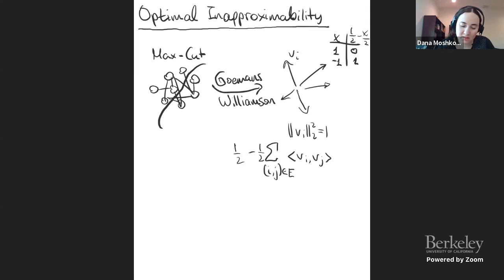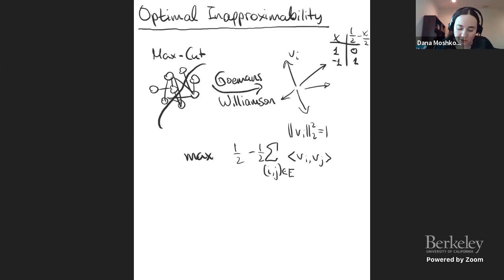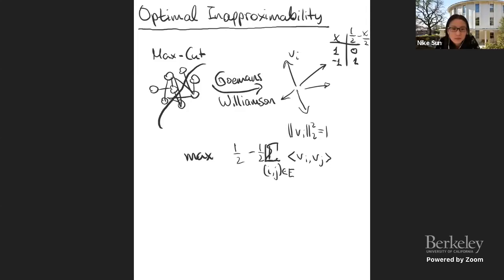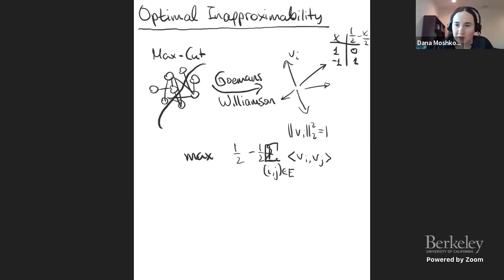So we'll see a lot of (1/2 - 1/2 · inner product), because this is the way to translate between inner products and 0/1 values. This is the geometric problem we're going to look at: we search for unit vectors in R^n and we want to maximize this sum of (1/2 - 1/2 · v_i · v_j). There's a correction noted — the sum should be outside, or we can make it into an average.